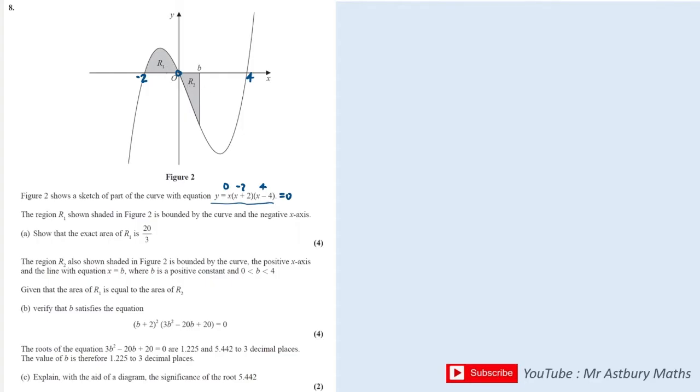So R1 is between minus 2 and 0, so I'm going to be integrating between minus 2 and 0. We always put the number which is greater along the x-axis at the top. So 0 is bigger than minus 2, so we put that at the top. And we're going to integrate this function here which when expanded will be x cubed minus 2x squared minus 8x.